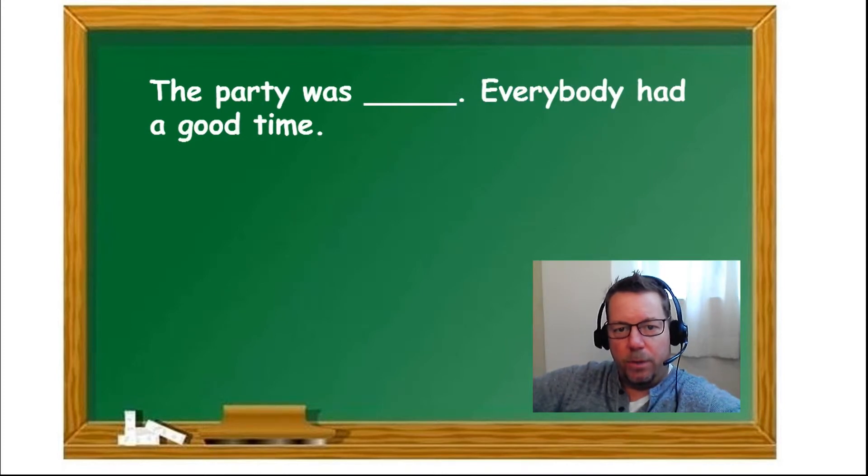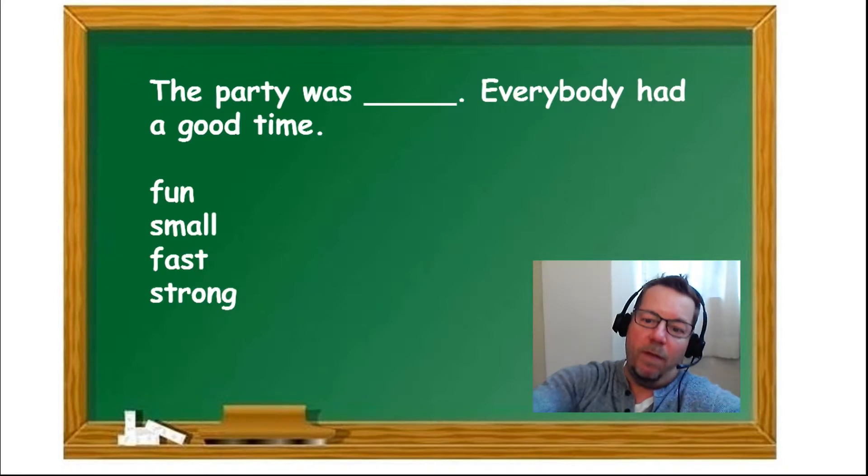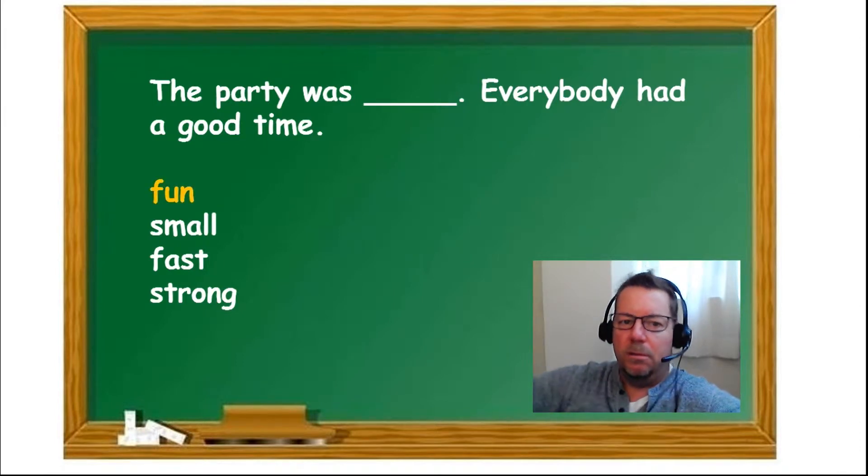Next question. The party was blank. The party was what? Everybody had a good time. So the party was fun, small, fast, or strong? Everybody had a good time. So when we look at which word fits, you have to look at the rest of the sentence. We see good time. So good time means fun. The party was fun.